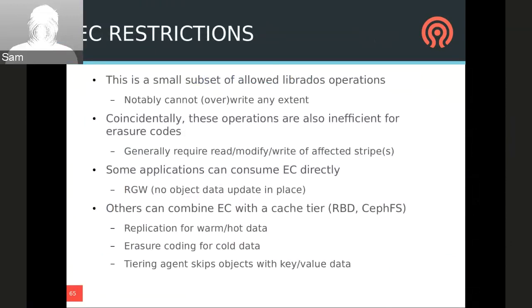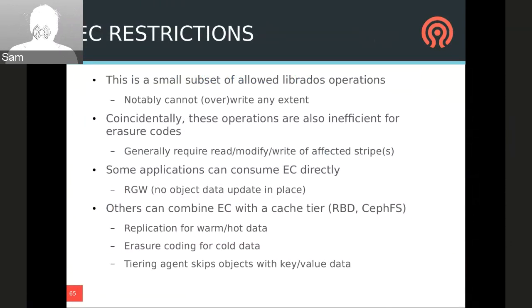This restricts erasure-coded pools to a subset of RADOS operations — notably no overwrites. The disallowed operations are also the ones which are inefficient to do on erasure-coded objects anyway, since a partial overwrite would require either a complicated log structure or a read-modify-write. Some applications can use erasure-coded pools directly if they stick to the restricted interface. RadosGW mostly creates immutable objects and can use erasure-coded pools for bulk data storage. Other users can use a replicated cache pool in front of an erasure-coded backing pool — the tiering agent will simply refuse to flush anything with key-value data. This is one of the reasons we introduced cache tiering and erasure coding at the same time.